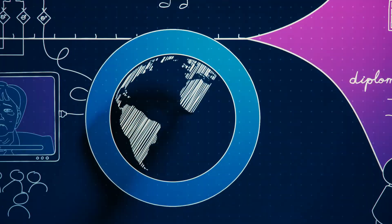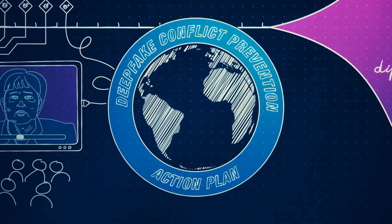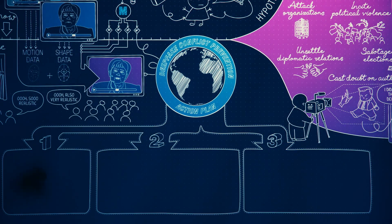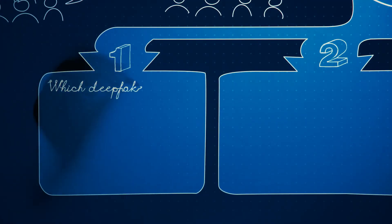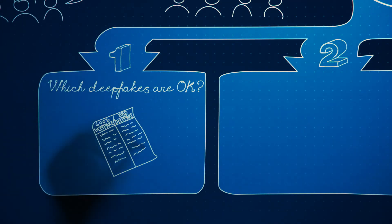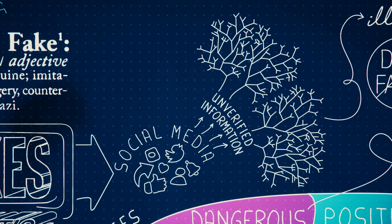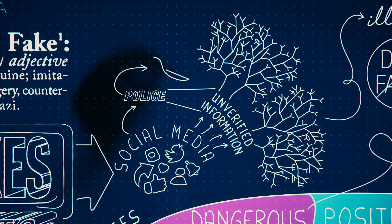So then what can countries do to prevent deepfakes from sparking conflict? First, countries must decide which uses of deepfakes are acceptable and which are not. This would help social media companies police their platforms for harmful content.